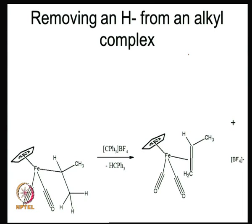There is one unusual method of synthesizing metal olefin complexes: by removing a hydride ion using the trityl cation. The trityl cation is stabilized by the presence of three phenyl groups and can abstract a hydrogen atom from an alkyl complex. If the hydride is abstracted by the trityl cation, one ends up with an olefin complex — in this particular case, a propene complex is formed. So alkyl complexes can be converted to olefin complexes in a few instances by use of the trityl cation.